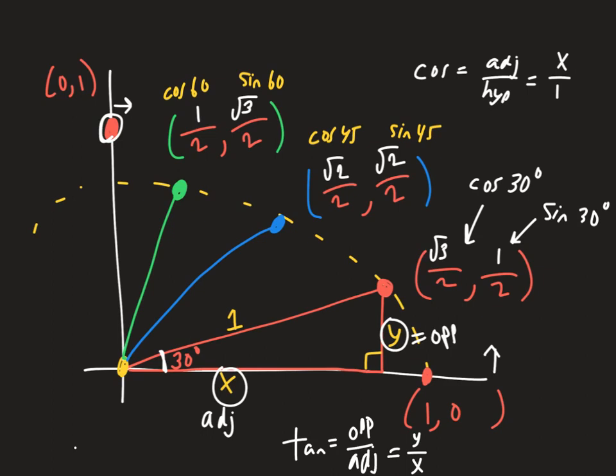Let's go back and walk through some of these problems. This whole little pattern is key to doing all of this. The only thing that can happen is when you get into different quadrants, some values are negative. For 30 degrees, the sine value is just 1/2 — you can see that right here. So that's going to be our answer for that question.